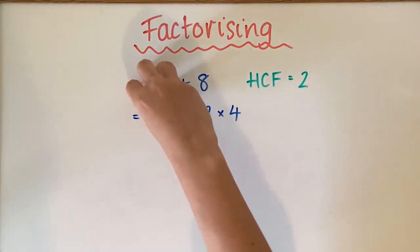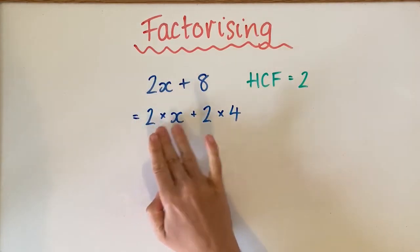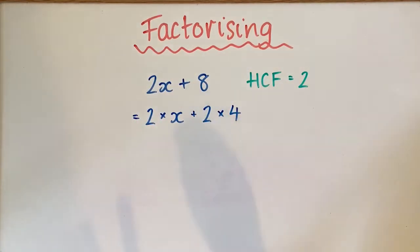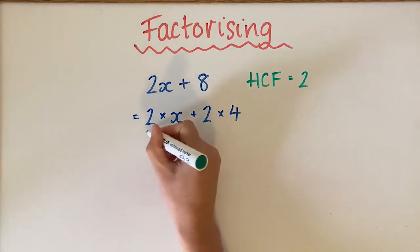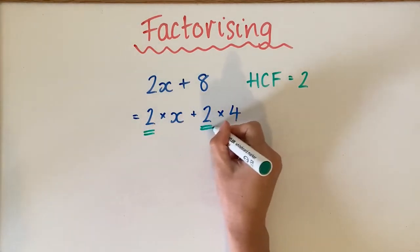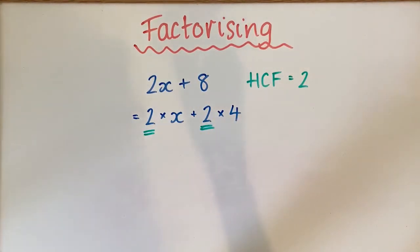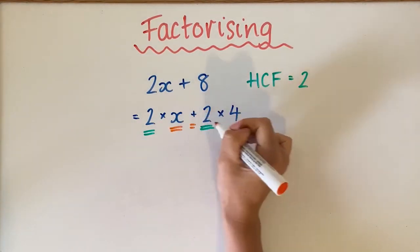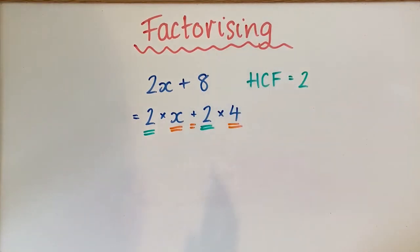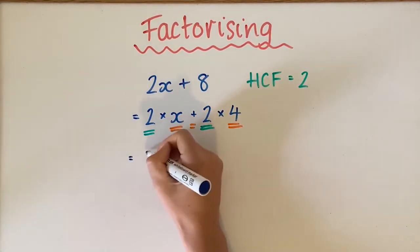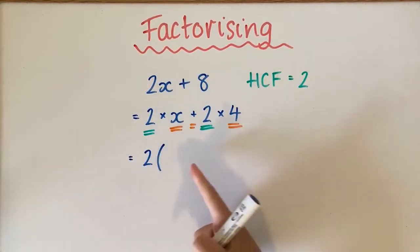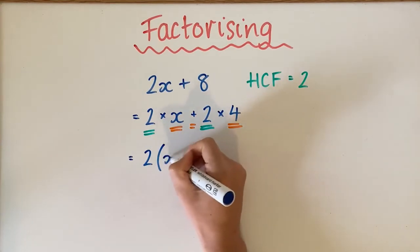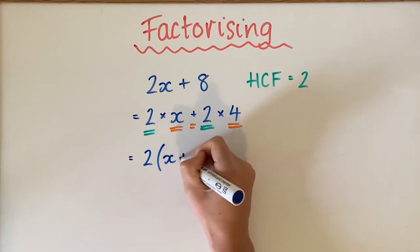This term relates to 2x and this term relates to 8. I'm going to color my twos the same because it's what they both share, and then everything that is not the same — x, the plus, and the 4 — are a different color. I put the 2 out the front, and everything that is orange goes inside the brackets.